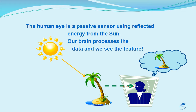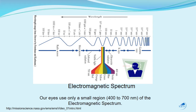The human eye is really a passive sensor — it uses the reflected energy from the Sun on objects. Our eyes collect the information, our brain processes it, and we see the image. This is the graph of the electromagnetic spectrum, and you can see that we use just a small part of it, between 400 and 700 nanometers, but the spectrum goes from very long-wave radio waves all the way up to very high-energy gamma radiation.